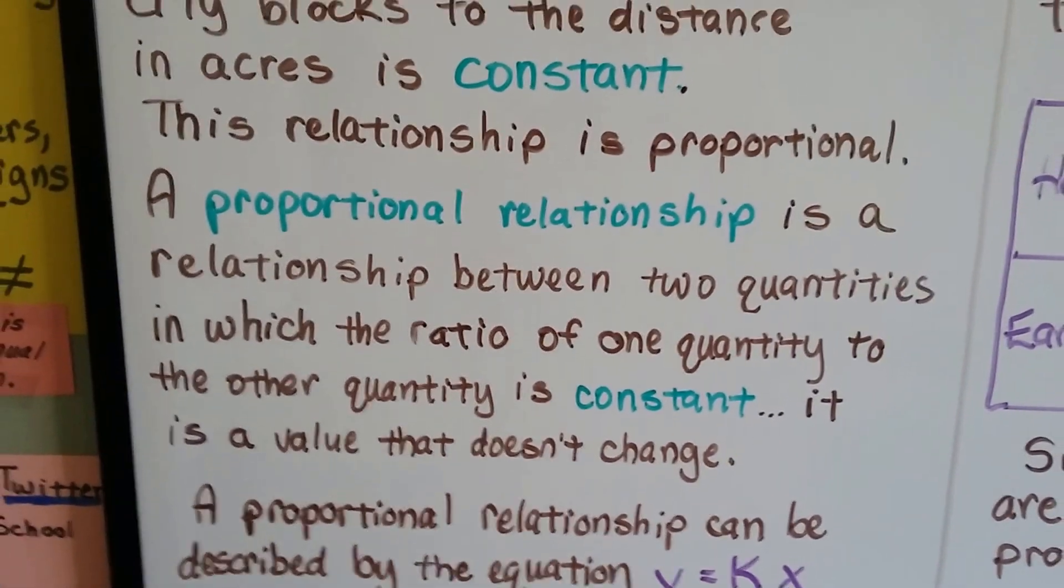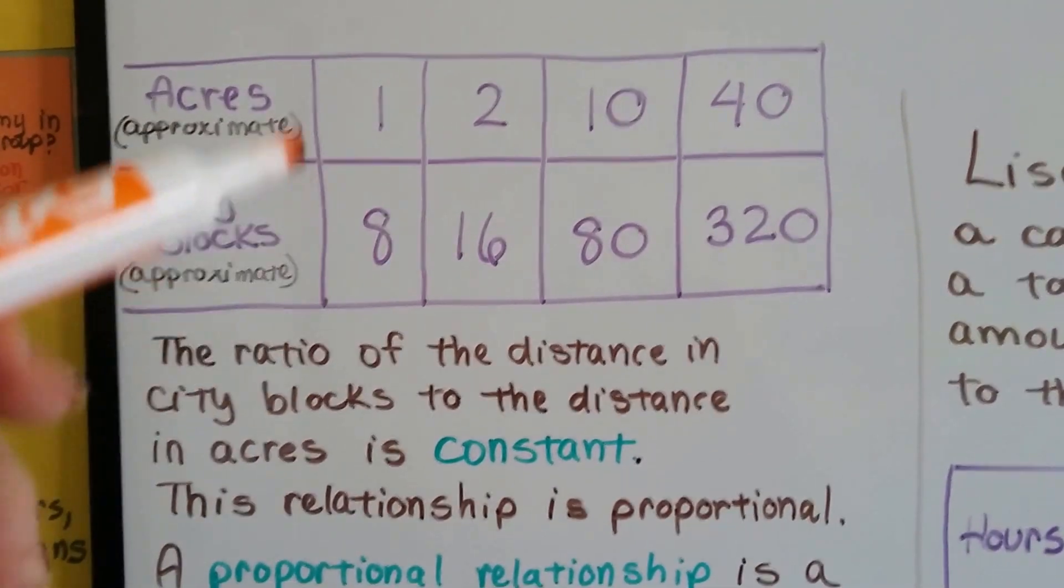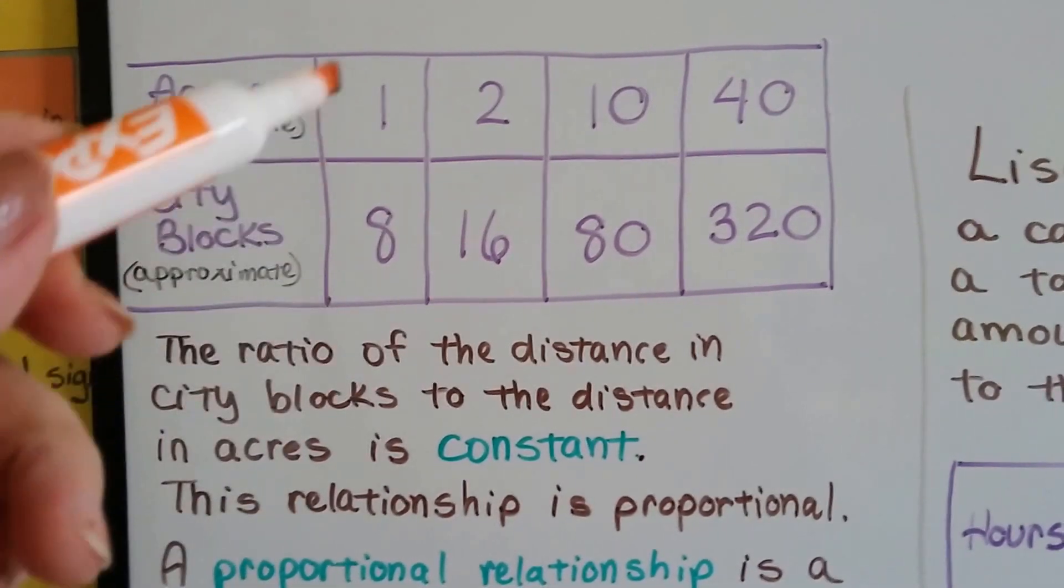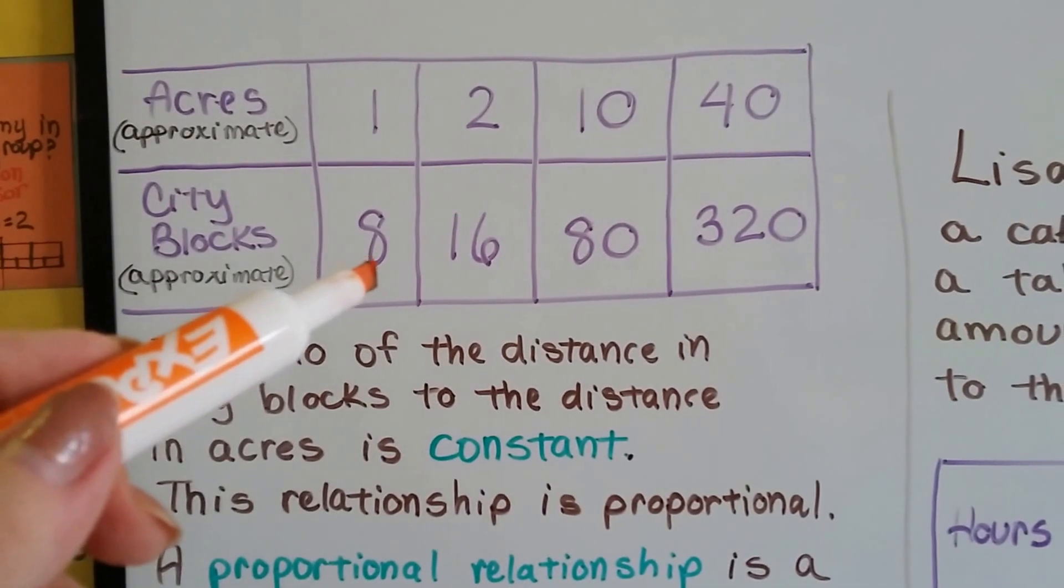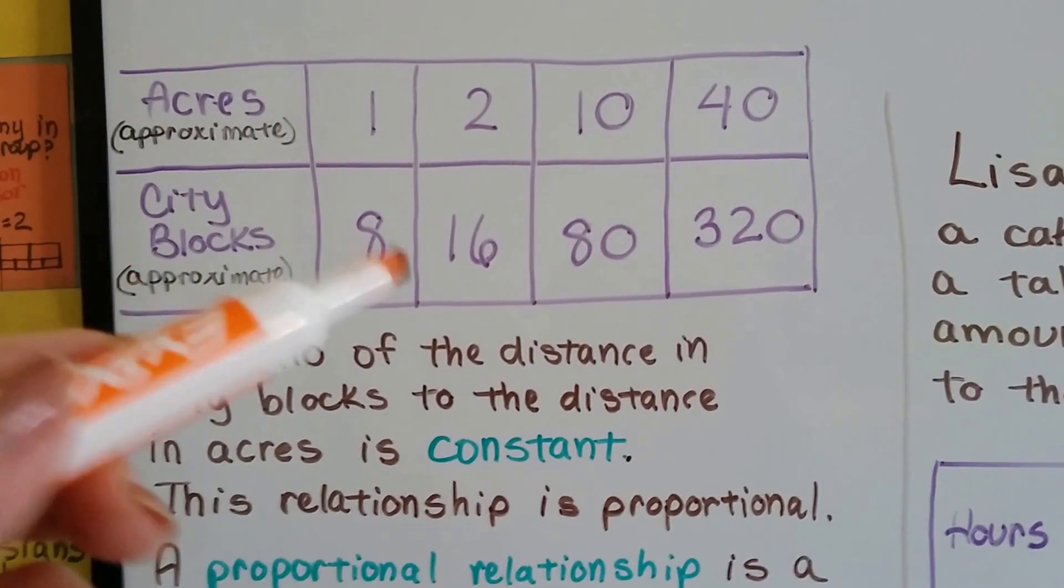It's a value that doesn't change. This is not going to change. Now, these are approximate values, because two is really closer to 17 city blocks. But I tried to keep the proportions the same, so I used 1 to 8. And this isn't going to change. The size of acres and city blocks are not going to change. So they're constant.